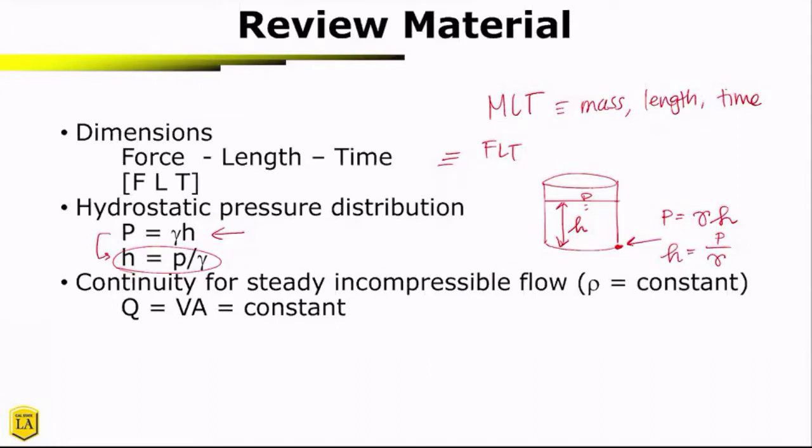Also continuity for steady incompressible flow where density is constant is Q equals VA and that is a constant as we go through a pipe network.